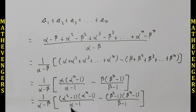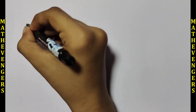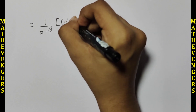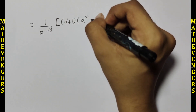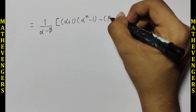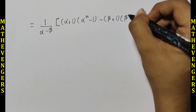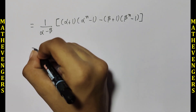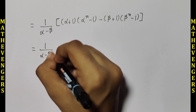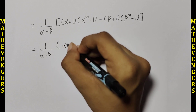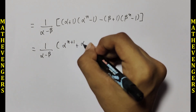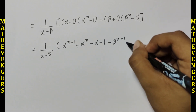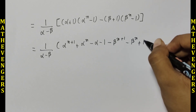After opening the brackets and applying the identity for a² - b², we get 1/(alpha - beta) times (alpha + 1)(alphaⁿ⁻¹ - 1). After expanding further, we obtain 1/(alpha - 1) times [alphaⁿ⁺¹ + alphaⁿ - alpha - 1 - betaⁿ⁺¹ - betaⁿ + 1].